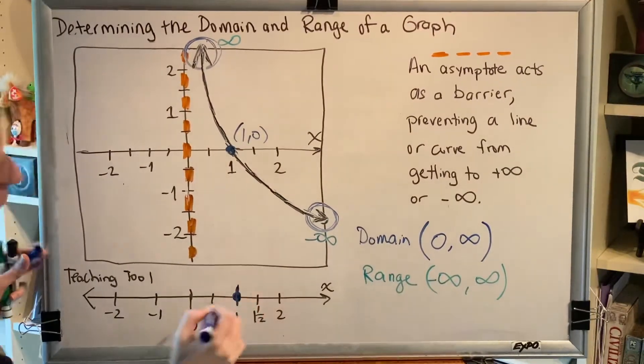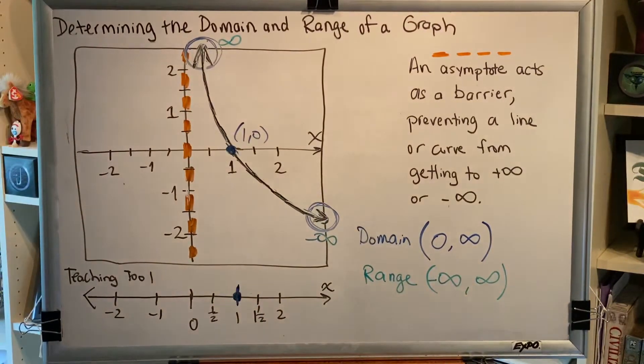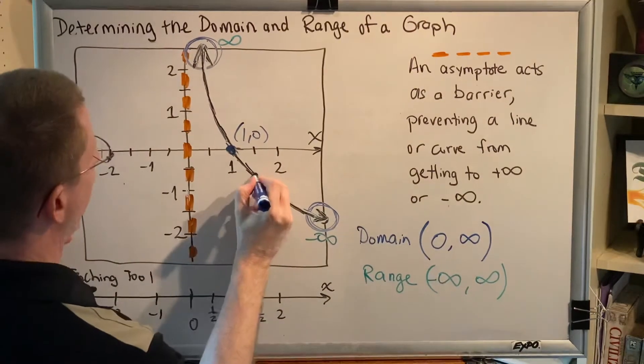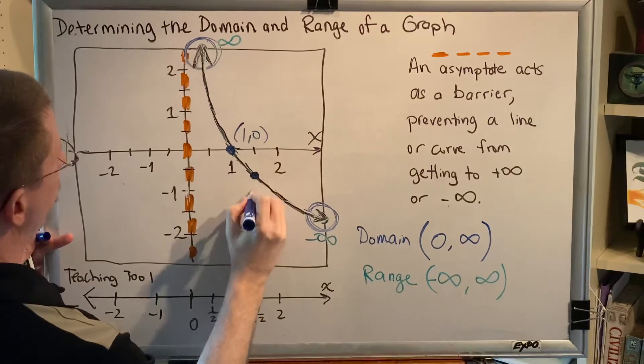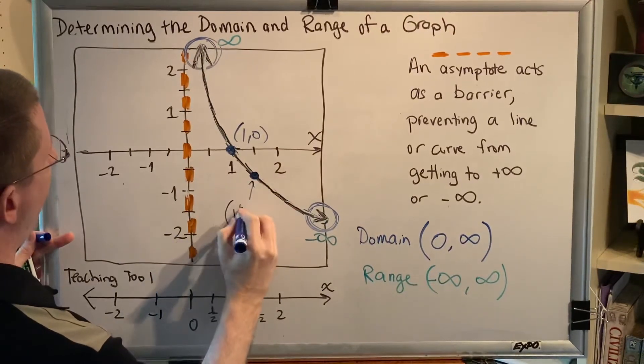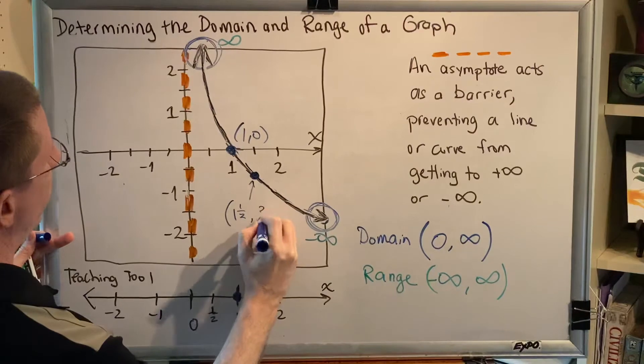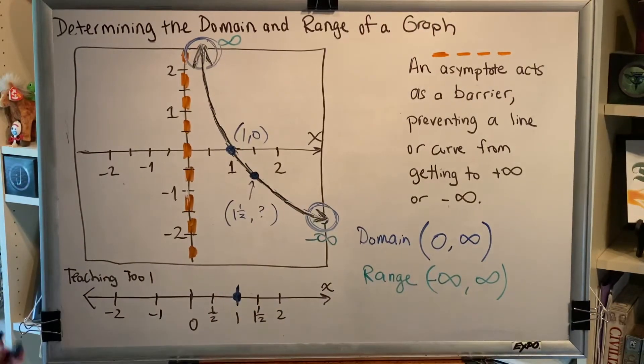Let's get another dot. Let's get a dot over here. Well, halfway between one and two would be one and a half, so it's looking like this is the point one and a half comma something. I don't know what the y coordinate is, but I don't care because I'm measuring domain.